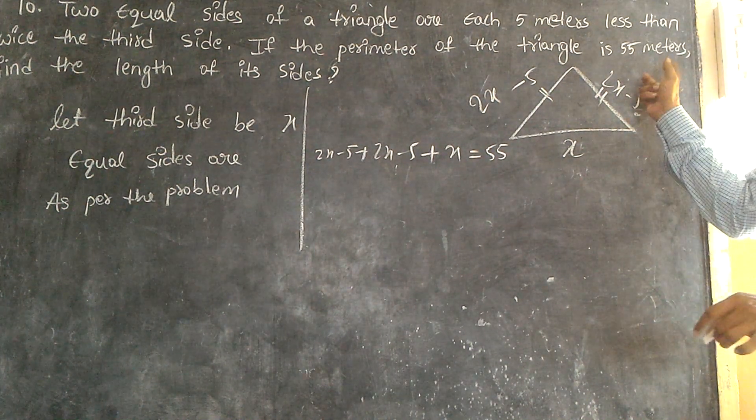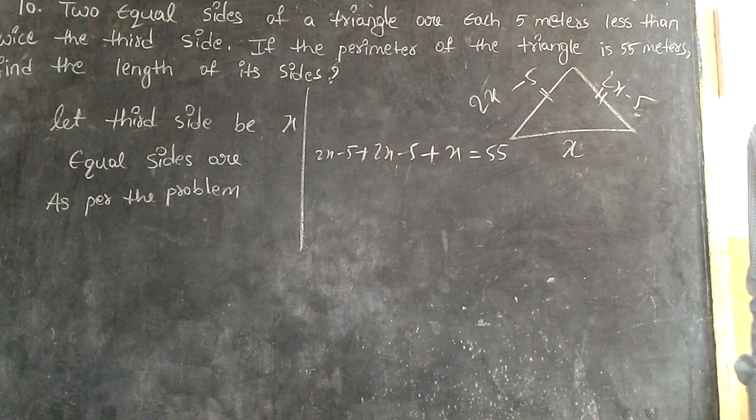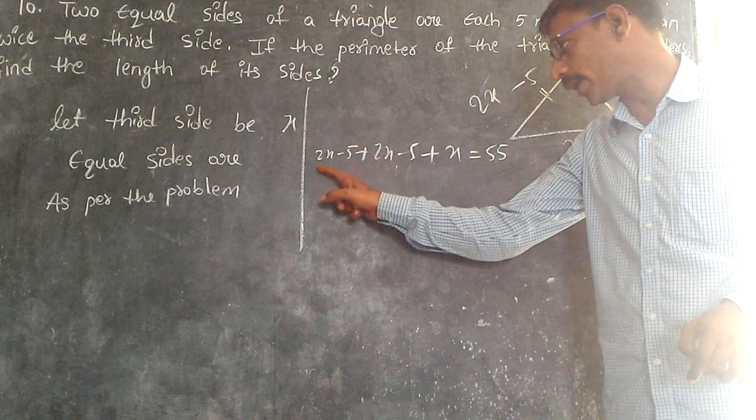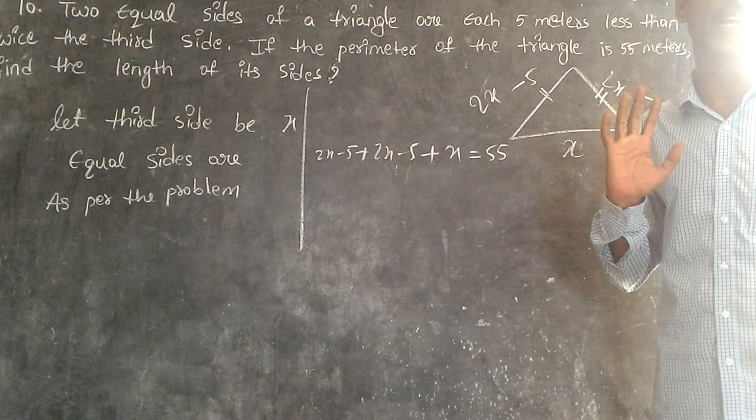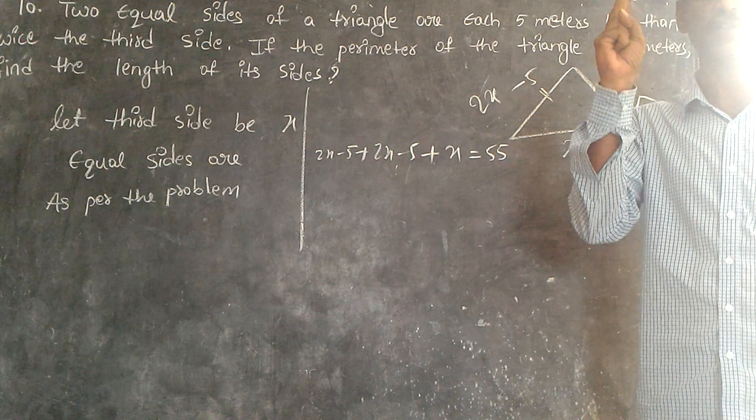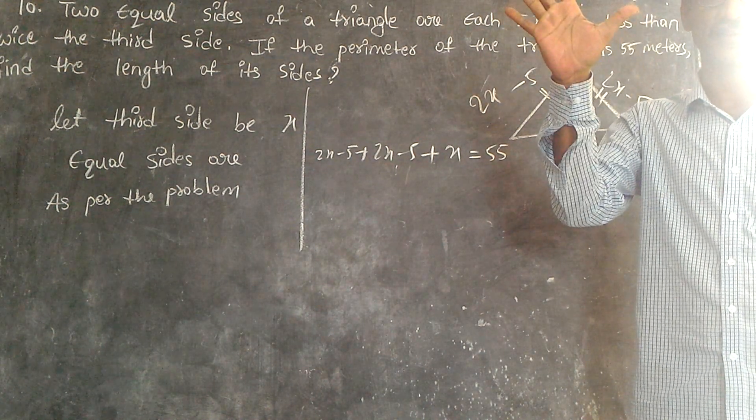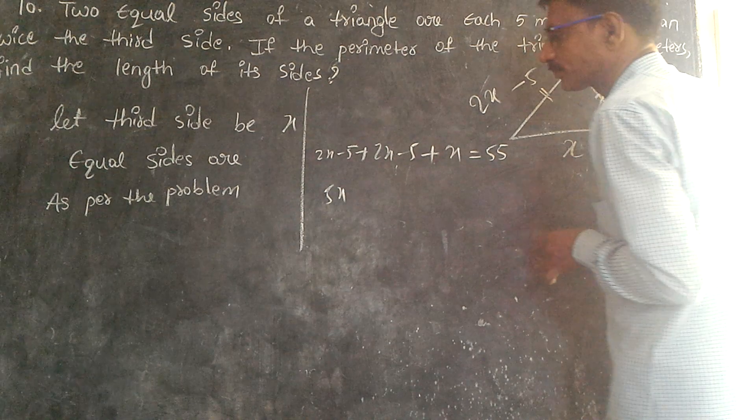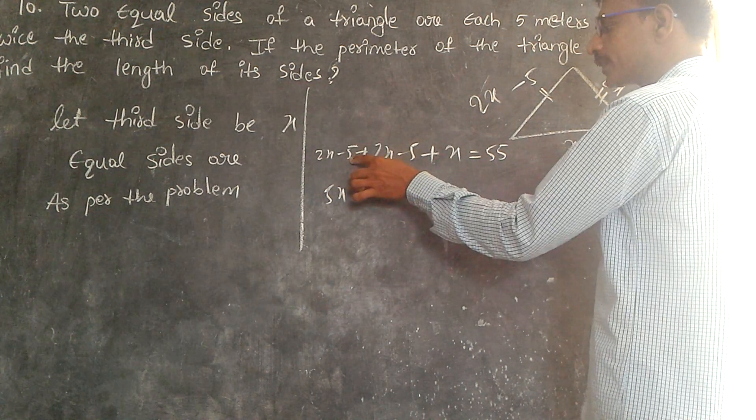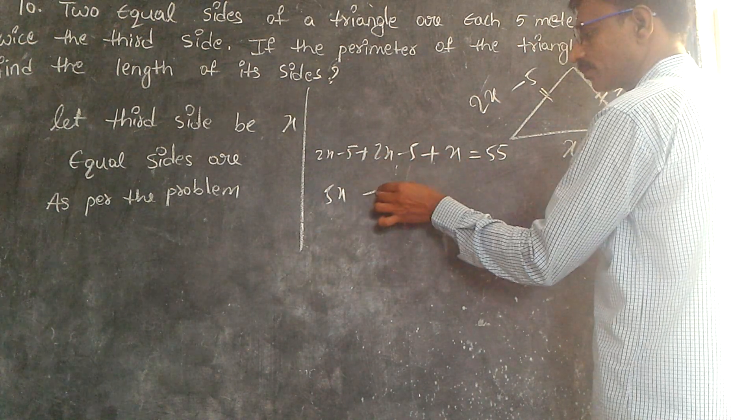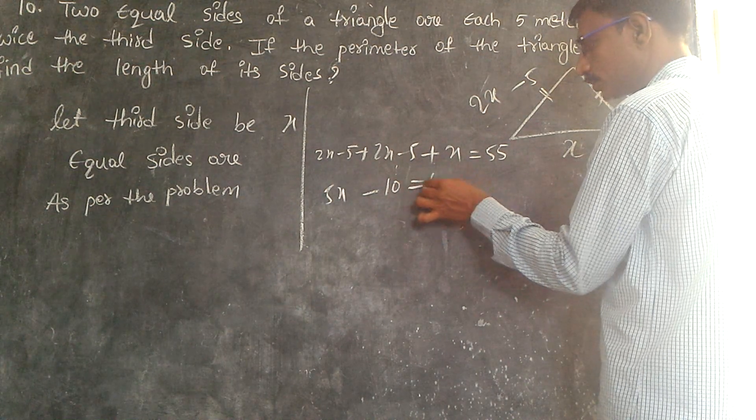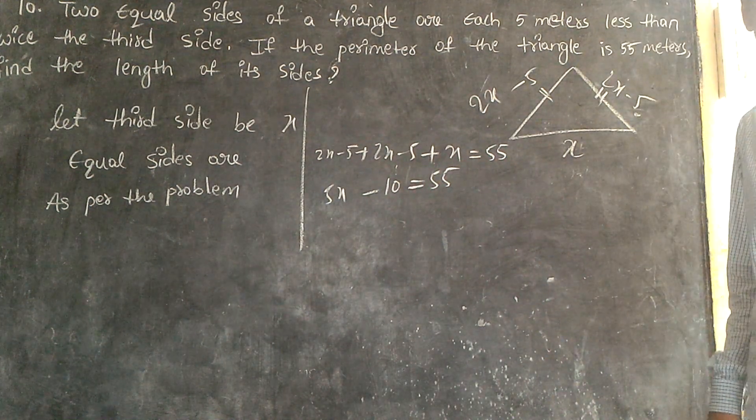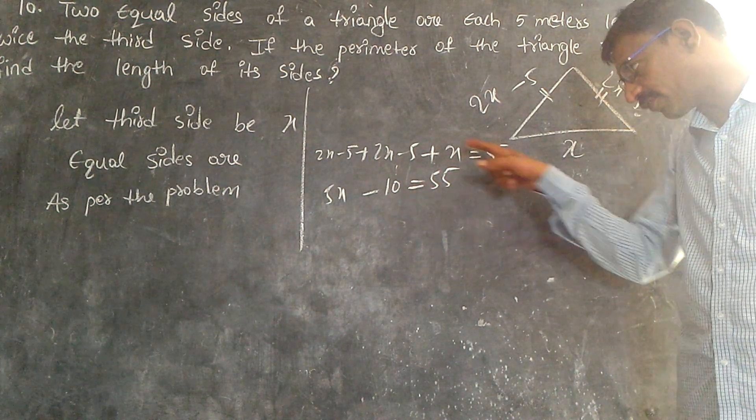So 2x plus 2x plus x - how much? - 5x. So 5x minus 5 minus 5, minus 10, this equals 55. This minus 10 will go this side plus 10.